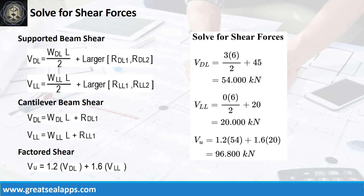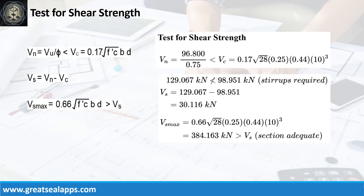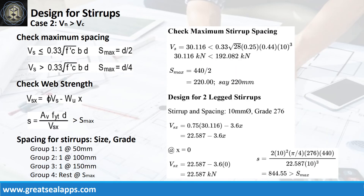The shear force from dead load is 54 kN and live load is 20 kN, for a factored shear force of 96.8 kN. The nominal shear force is 129.067 kN, greater than 98.951 kN concrete capacity. Additional shear capacity from stirrups is 30.116 kN, less than 384.163 kN maximum stirrup capacity. The maximum stirrup spacing is 220 mm. The web strength at face of support is 22.587 kN, with initial spacing at 844.55 mm.